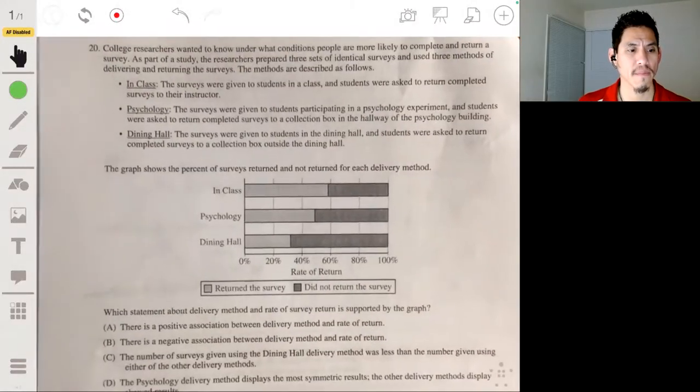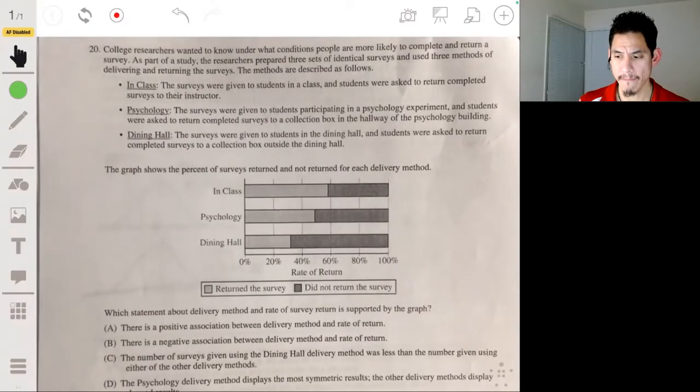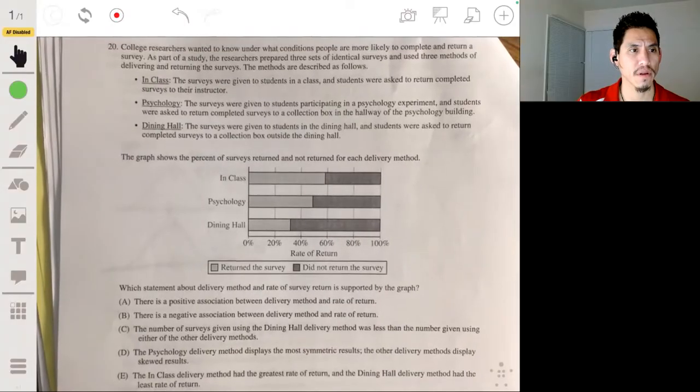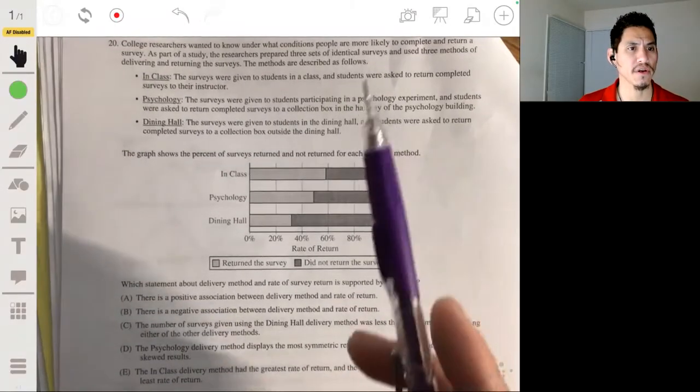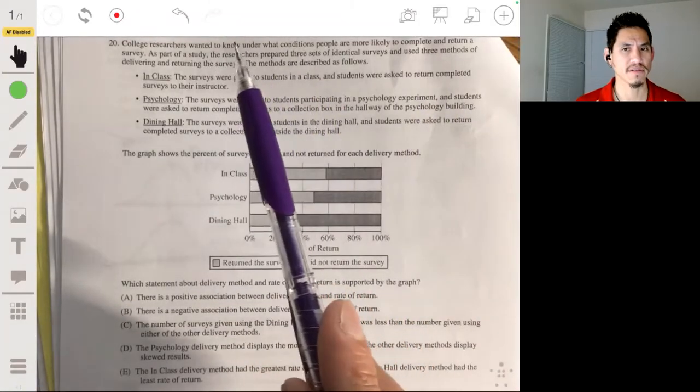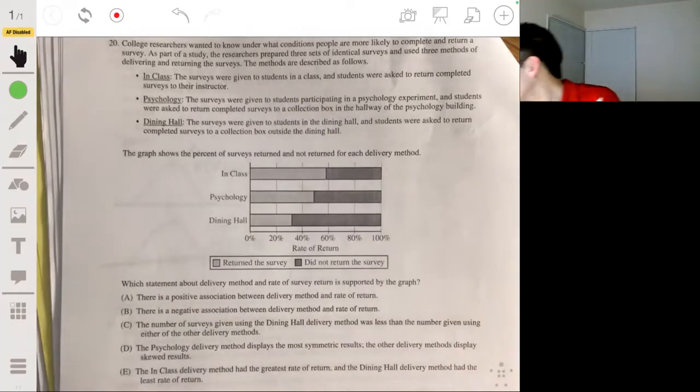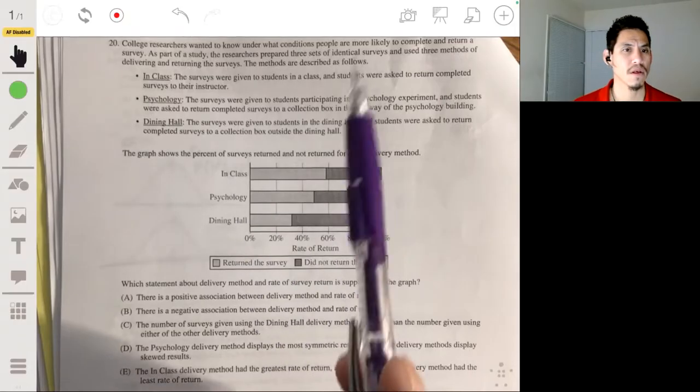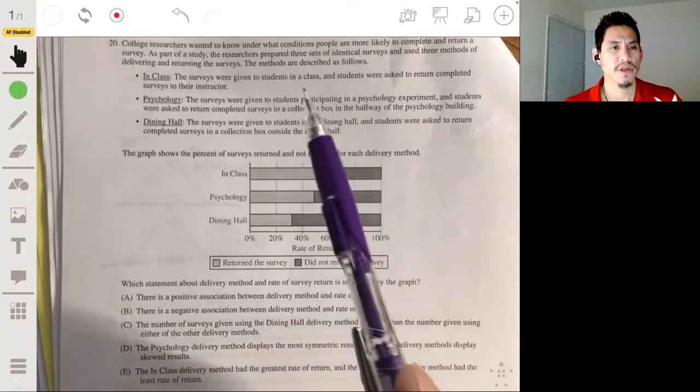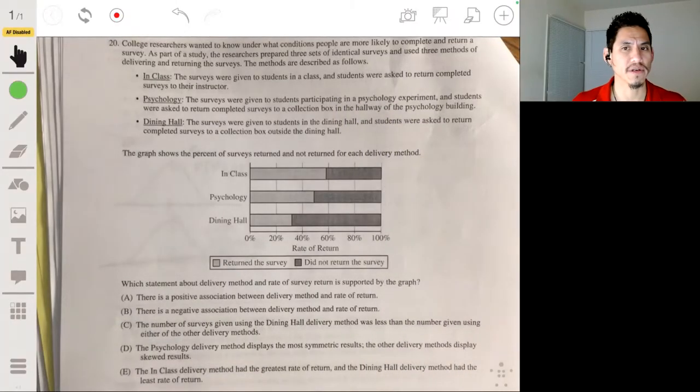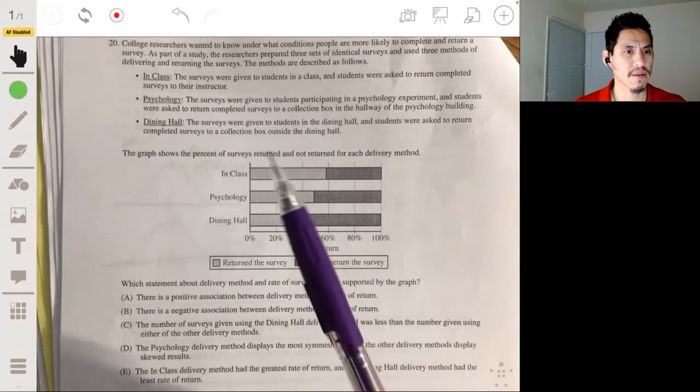Number 20. Alright, so the college researchers wanted to know what conditions people are more likely to complete and return a survey. That's an interesting study. The researchers prepared three sets of identical surveys and use three methods of delivering and returning the surveys. The methods are described as follows.